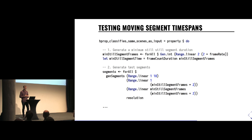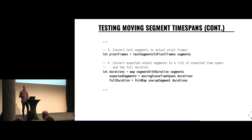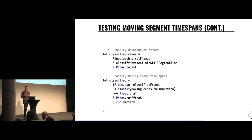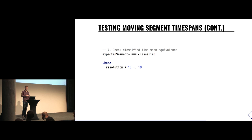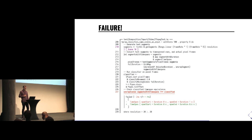The second property checks that scenes have the correct time spans. Most of the setup is the same: generating pixel frames, then in step four figuring out what the expected time spans are from the generated data and computing the full video duration. Step five classifies all the frames — the classifier is a two-step process: first classifying each frame as moving or still, then in step six classifying the time spans of the moving scenes. Step seven compares that the expected time spans match the actual classified ones.